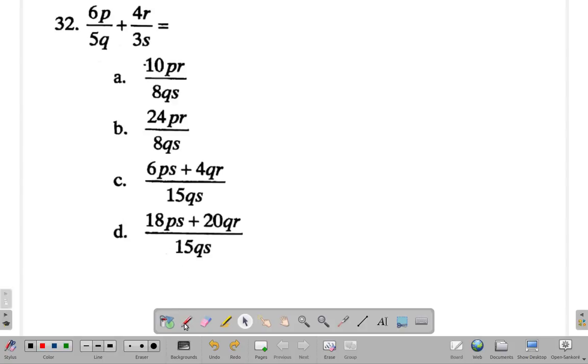You have 6p over 5q plus 4r. I just write my r as big R over 3s. Now it's really two fractions added together. It's just that you have numbers and letters mixed up. Now what's the LCM of 5q and 3s? It is 5q times 3s.